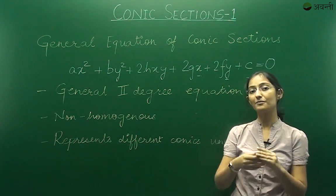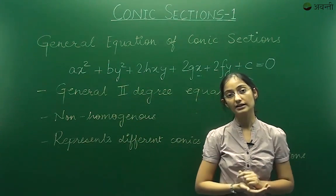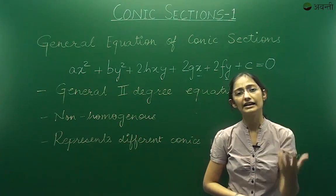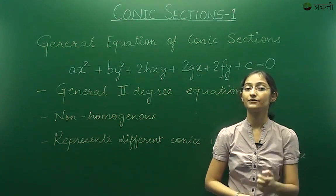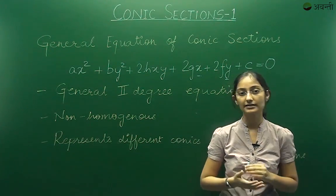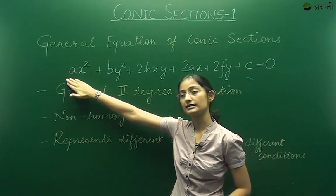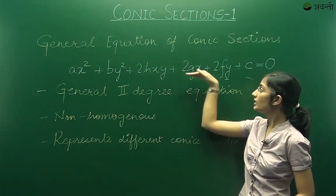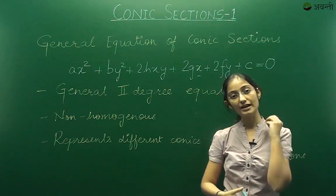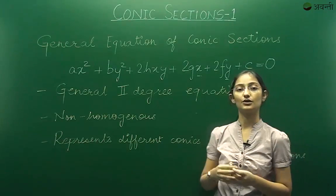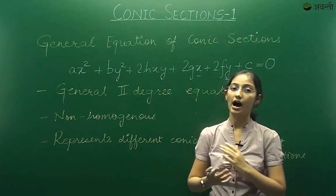Now if you recall, I have mentioned that this particular equation collectively represents all the conic sections. Now if I want to identify what sort of conic it is representing, I need to have some specific conditions so that I can make this identification. That is why I will say that there are specific conditions on the constants A, B, H, G, F and C and under these particular conditions, we can define whether this equation will represent a circle, a parabola, an ellipse or a hyperbola.